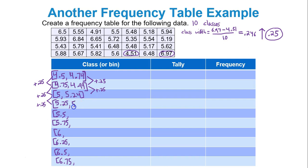You'll get 5.49, you'll get 5.74, you'll get 5.99, you'll get 6.24, you'll get 6.49, you will get 6.74, and then you'll get 6.99 as your last upper class limit. So these are the classes.